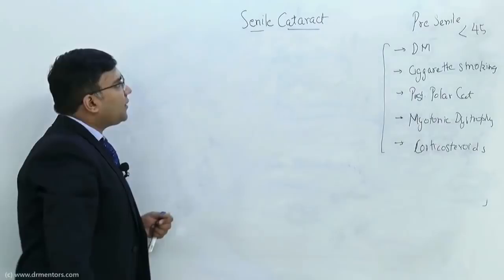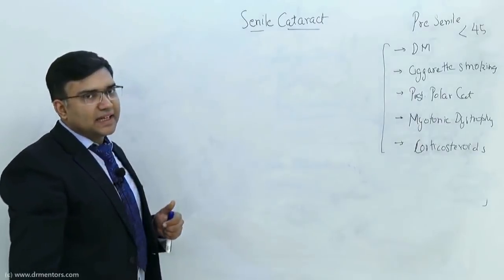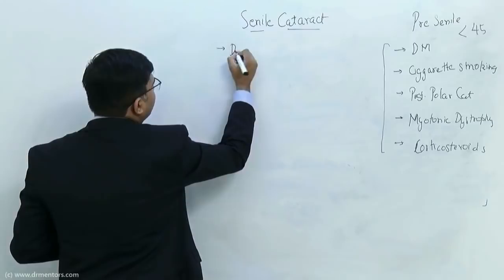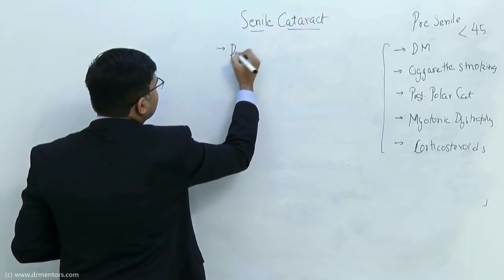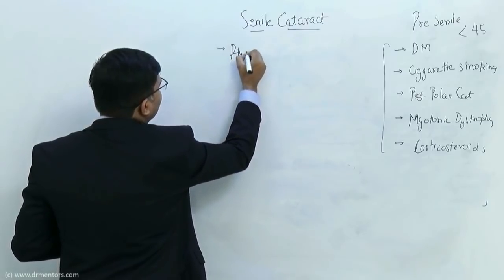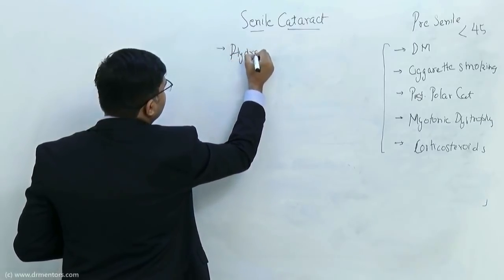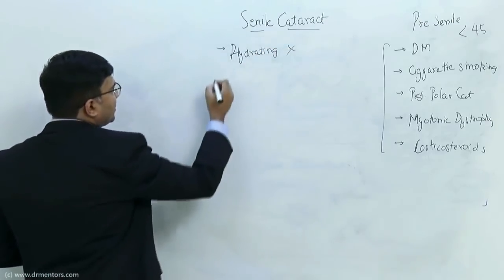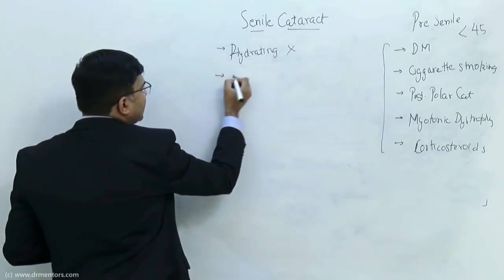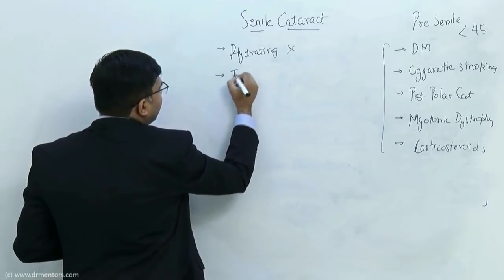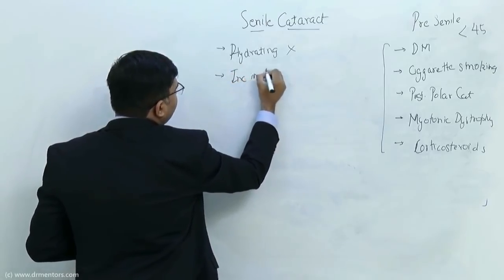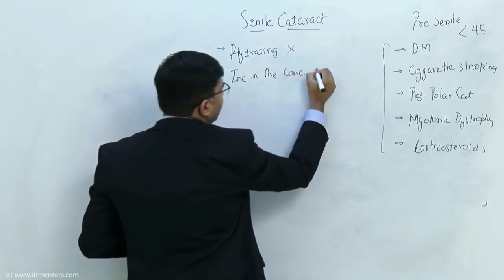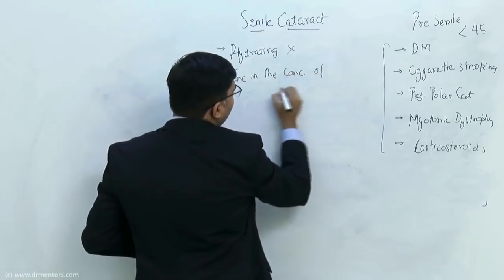Now we come back to our main topic, the senile cataract. Why does senile cataract occur? First of all, because the hydrating mechanisms get impaired. The second thing is an increase in the concentration of insoluble proteins.